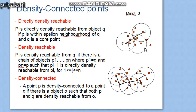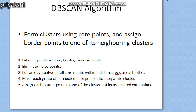Using these concepts we can define the DBSCAN algorithm. DBSCAN searches for clusters by checking the epsilon neighborhood of each point in the database. If the epsilon neighborhood of a point p contains more than the minimum number of points, a new cluster with p as a core object is created. DBSCAN then iteratively collects directly density reachable objects from these core objects, potentially merging density reachable clusters. The process terminates when no new point can be added to any cluster, labeling all points as core, border, or noise, and eliminating noise points.